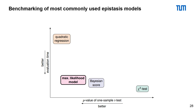We used our newly developed evaluation protocol for the most common models in literature and compared them to the new maximum likelihood model. The maximum likelihood model outperformed the Bayesian model and the variance model — the widely used chi-square test — in terms of quality.